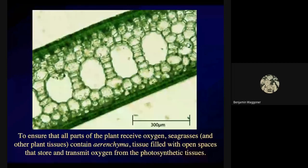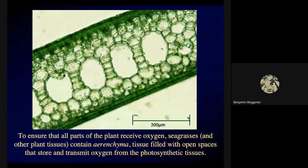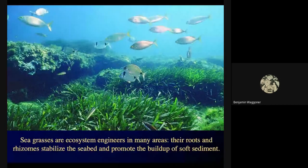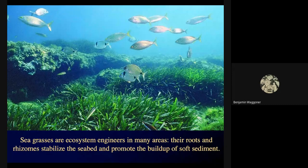The problem with living completely submerged in water is that it may be hard for oxygen to get to all parts of the plant. So seagrasses contain aerenchyma — this is a cross section through a seagrass leaf showing open air spaces that transmit and store oxygen produced by the photosynthetic tissues. In many places they're important ecosystem engineers: seagrass roots and rhizomes — the horizontal spreading stems — stabilize the seabed, keep it from eroding, and allow soft sediment to build up.